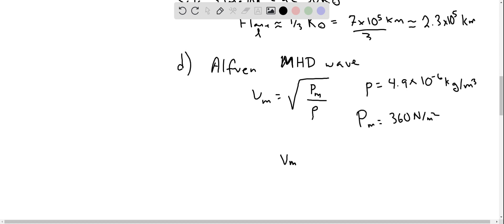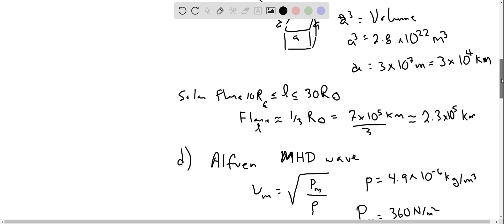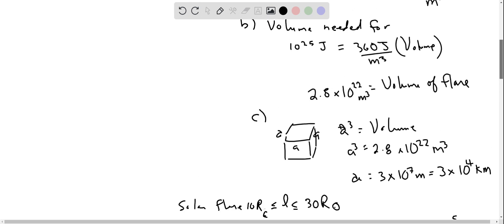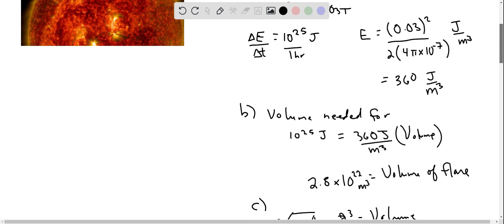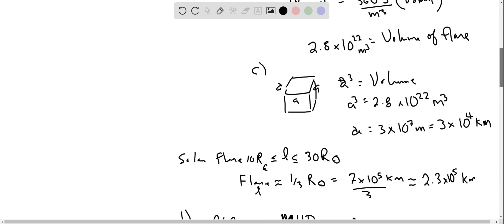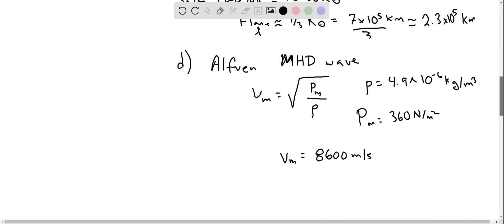And solving then for the speed, we get a fairly high speed, roughly 8600 meters per second. And now what we're going to see is if this Alfven wave makes sense for the length and the time of this flare. For the energy to propagate outwards took an hour over a length of approximately 3 times 10 to the 4th kilometers.